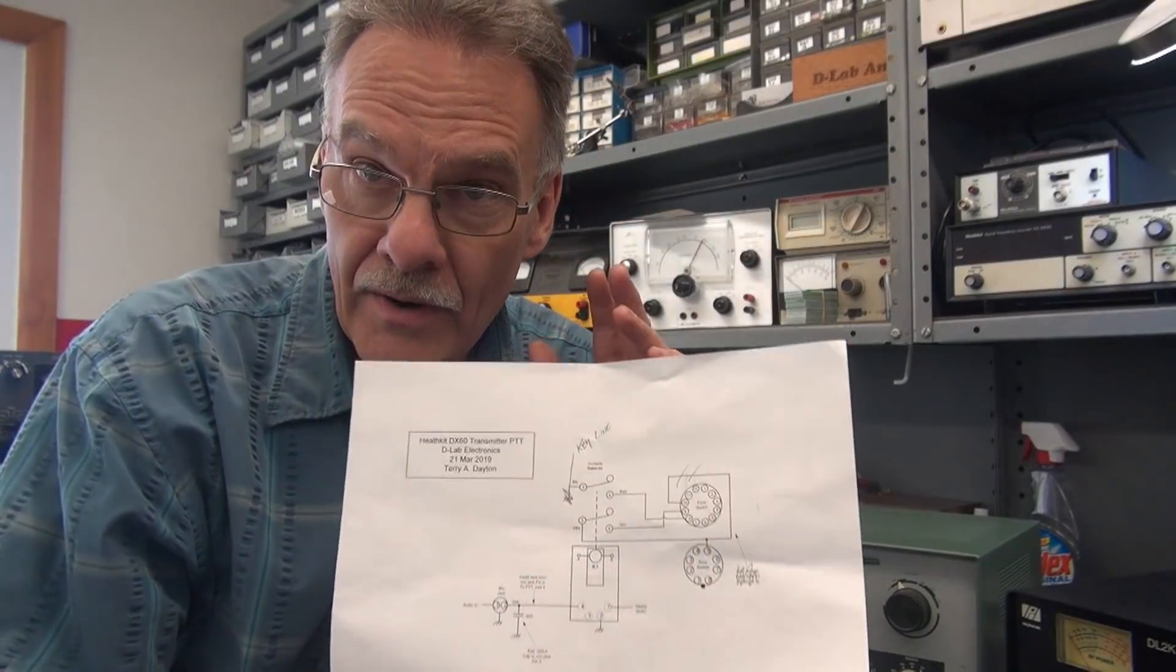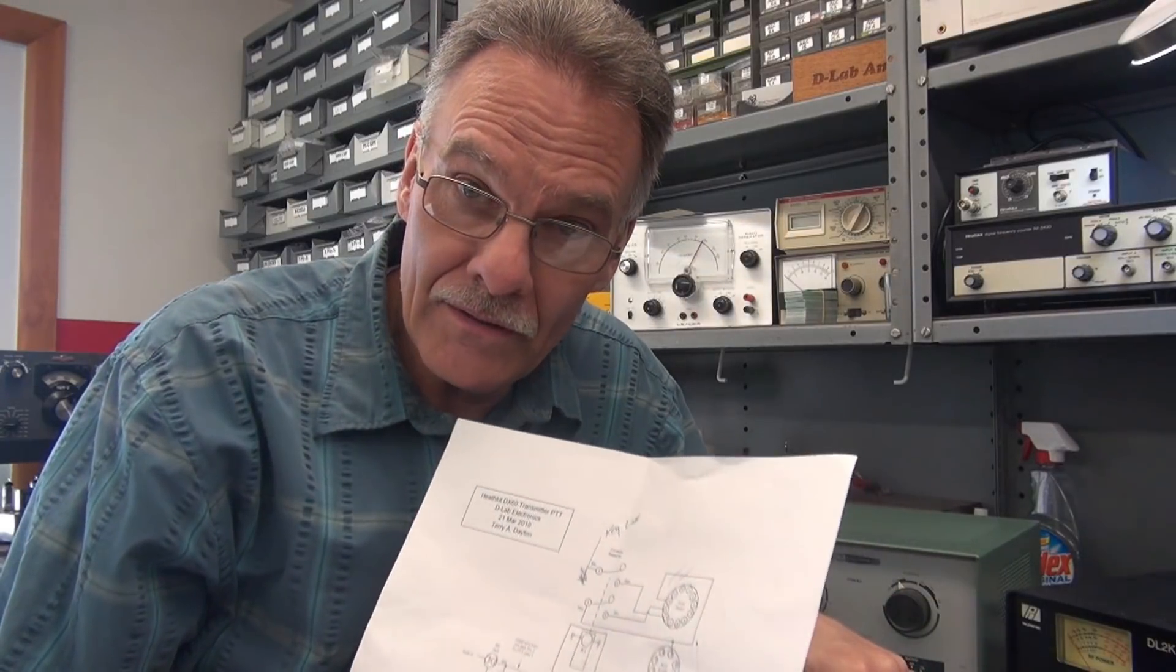A successful integration of the K1 module into a DX60B transmitter. If you have a plain DX60 or the A, the installation would be the same because they all share that same function switch configuration. That initial diagram that I showed you has been marked up because what I assumed the connections would be weren't all that accurate - it was a guess, I didn't have the radio at that point. But now it's here and I will update this diagram and post it at the end of this video.